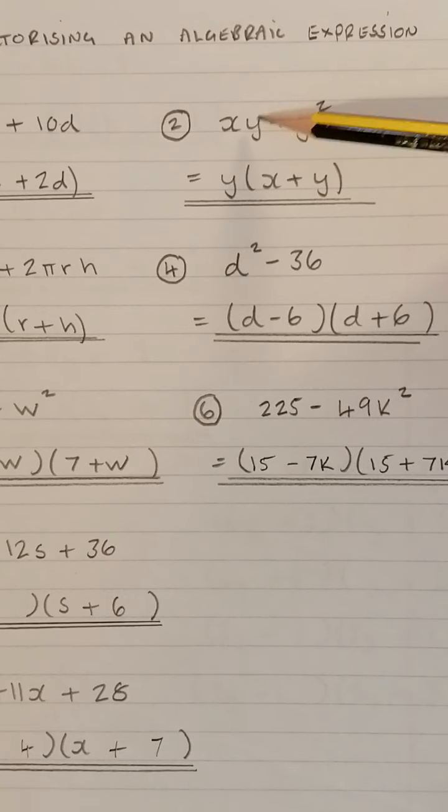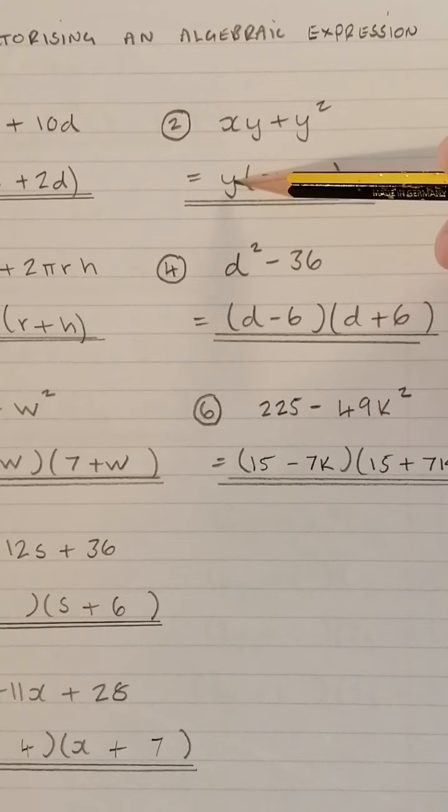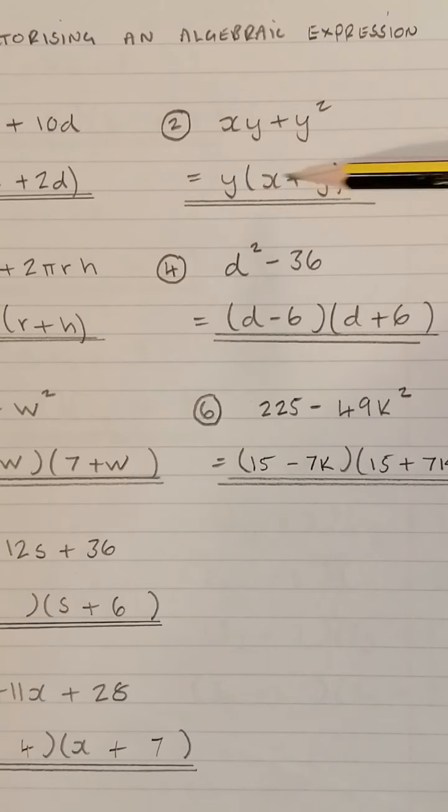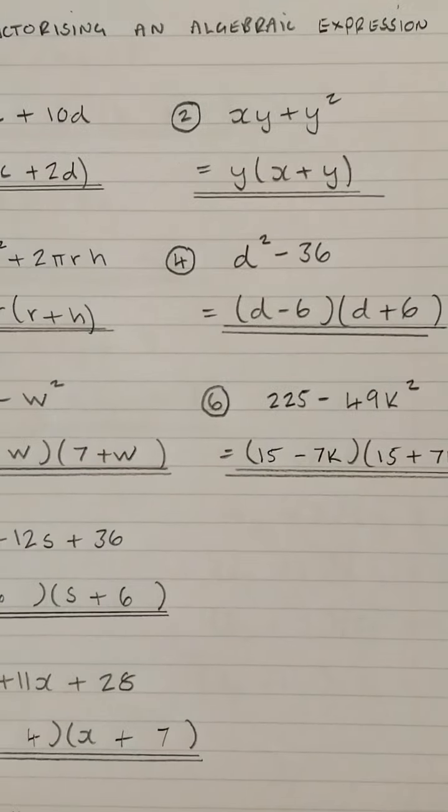We have XY plus YY, that's Y squared. So we can take Y out as a common factor. Y times X gives XY, and Y times Y gives Y squared. So that's number 2 done.